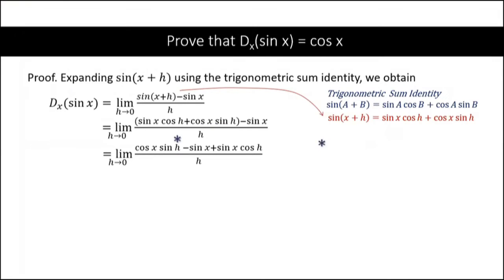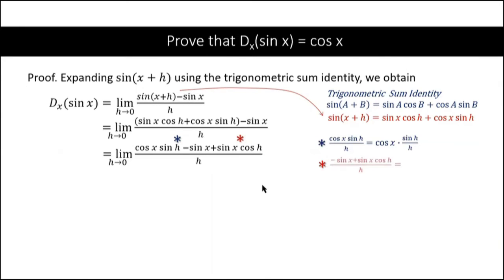Now we re-evaluate the given function. The term cosine x sine h over h can be written as cosine x times sine h over h. For the other term with the red asterisk — negative sine x plus sine x cosine h over h — we can factor out negative sine x as the common factor.